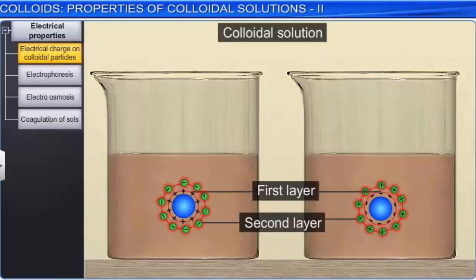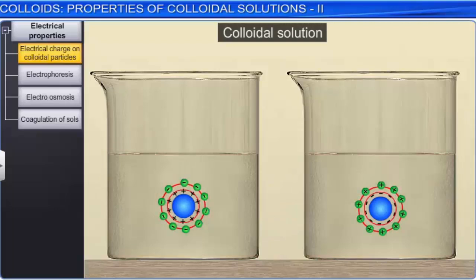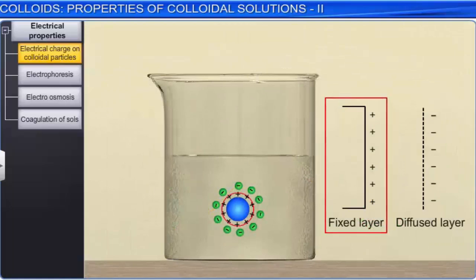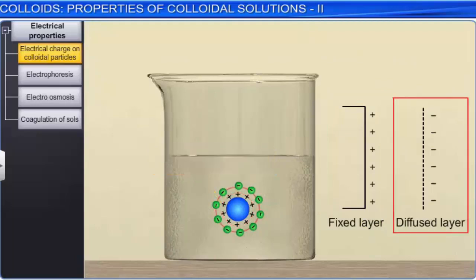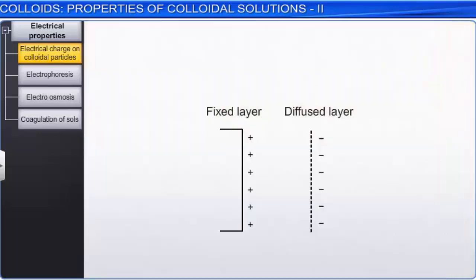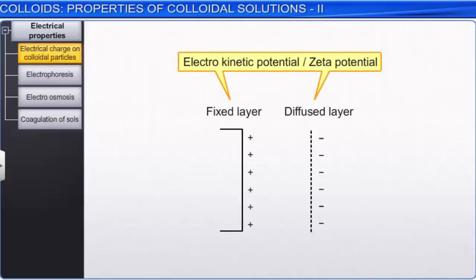The positive or negatively charged colloidal particles of a layer attract oppositely charged ions from the dispersion medium, forming a second layer. These counter-ions are not absorbed on the surface of the colloidal particles but exist in the solution. The combination of two layers of opposite charges around a colloidal particle is called the Helmholtz electrical double layer. The first layer is firmly held and is called the fixed layer, while the second or the outer layer is mobile and is termed as the diffused layer. The presence of opposite charges on the fixed and diffused layers results in a difference in potential called electrokinetic potential or zeta potential.